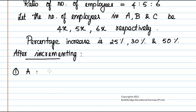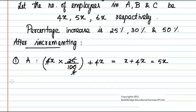Company A will have 4x × (25/100) + 4x. Since 25 divided by 100 simplifies when 4 cancels, this equals x + 4x = 5x.